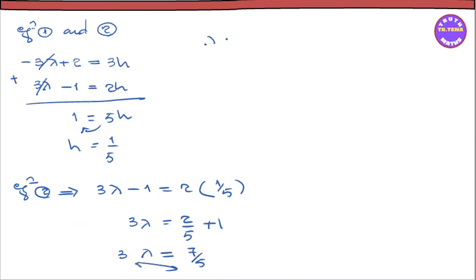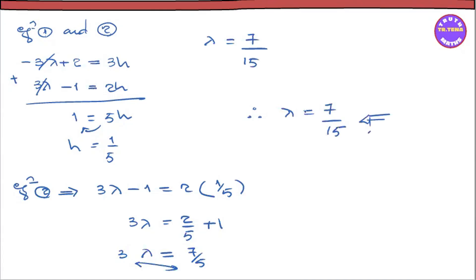Lambda is equal to 7 by 15. Therefore, lambda is equal to 7 by 15. We're going to see you in the next video. Alright, let's go to the next video. Thank you.